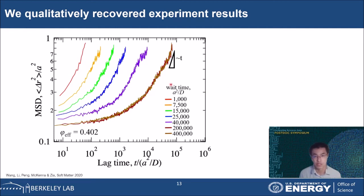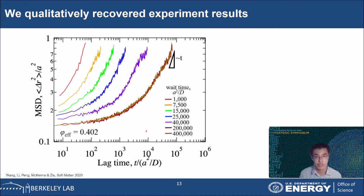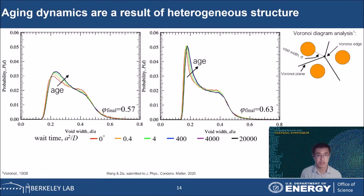We can imagine that with even higher concentration, aging dynamics will be even more pronounced and the system will take even longer to equilibrate. Our measurement on mean square displacement qualitatively recovers experimental results. Here I show mean square displacement from our collaborators as a function of lag time at different wait times for an effective volume fraction of 40.2%. We observe a similar shift of the curves to the right, and in the end mean square displacement curves overlap as a steady state is reached, although it takes much longer time for the experimental system to equilibrate, probably due to the softness of their particles.